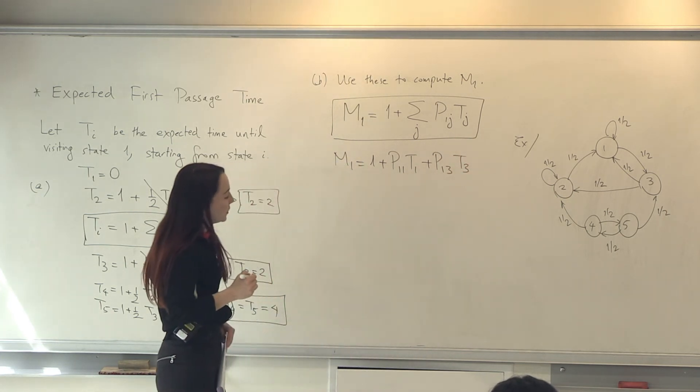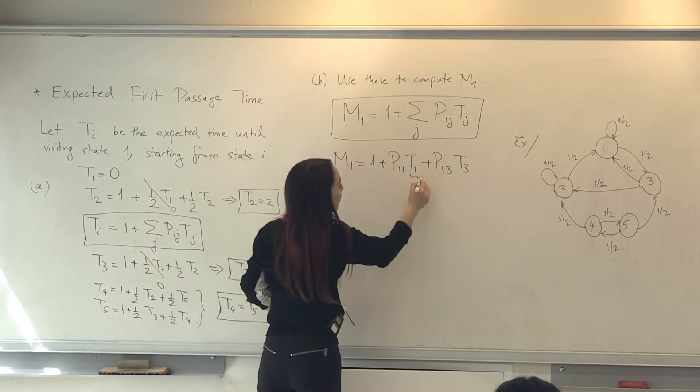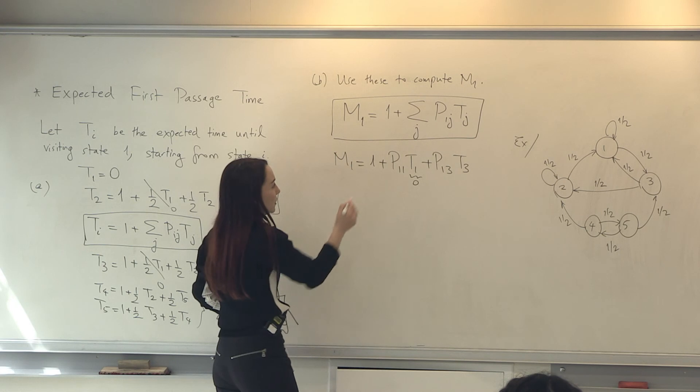In our example, that is it. Because from 1, I can only go to 1 and 3. This is 0 by definition.